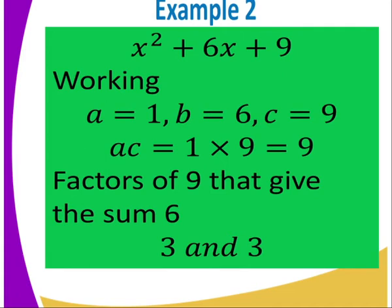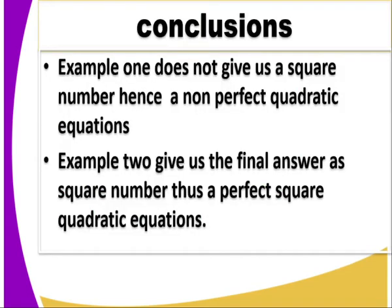Example 2: we have x squared plus 6x plus 9. That is a quadratic expression. We identify a, b, and c. My a equals 1, my b equals 6, and my c equals 9. When we take ac, I get 1 times 9, which equals 9. The factors of 9 that give me the sum being 6 are 3 and 3. In that case, we rewrite the equation. After writing the equation, the answer is supposed to be 3 and 3. After doing that, we can come up with a conclusion.